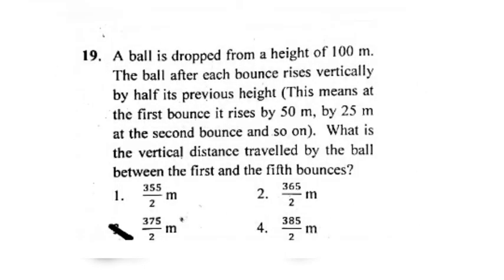This question asks: what is the vertical distance travelled by a ball between the first and fifth bounces? The right answer is 375 upon 2 meters, option number 3.